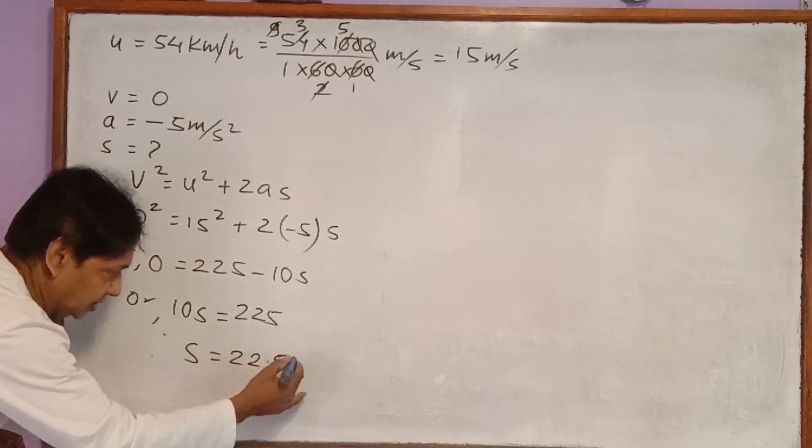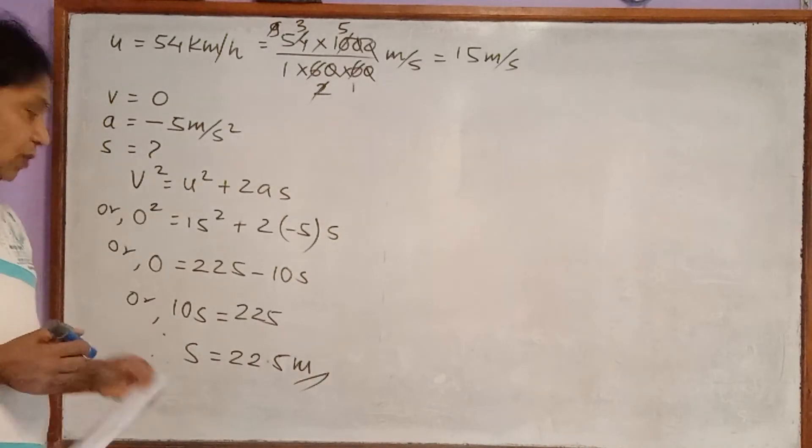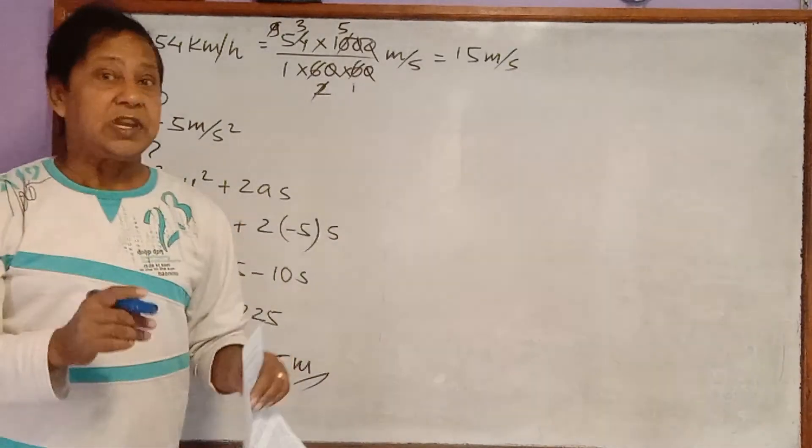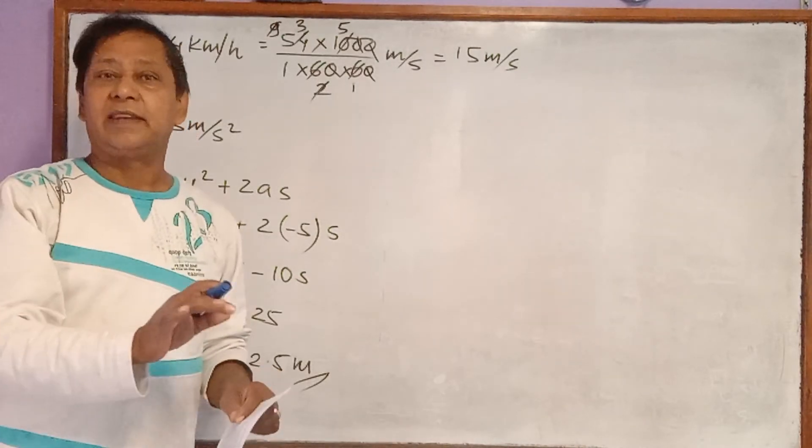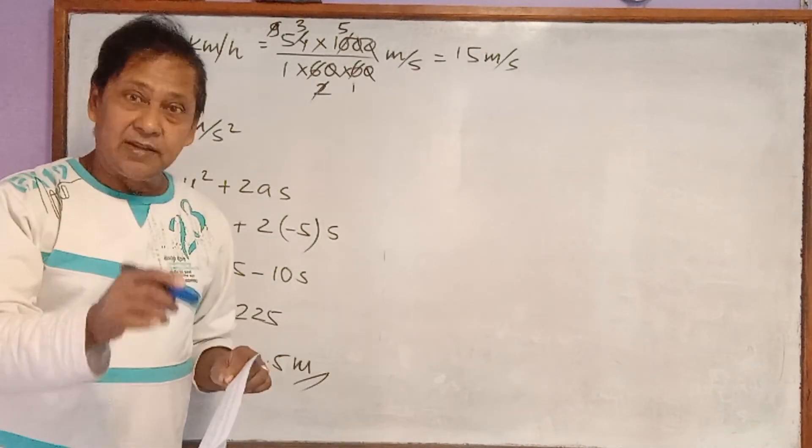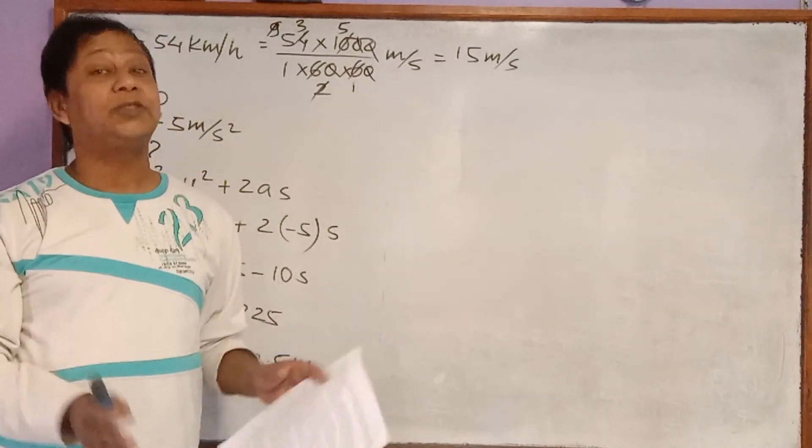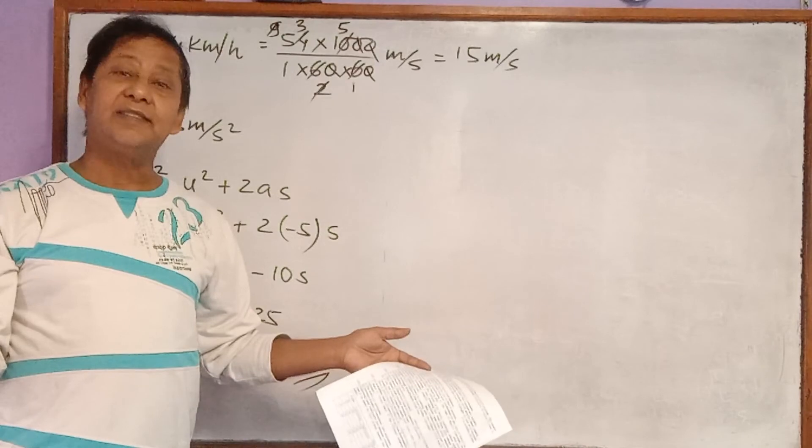And unit of distance is meter. Distance covered by the car when brake was applied is 22.5 meter. But the boy was at the distance of 25 meter. That's why accident doesn't occur.